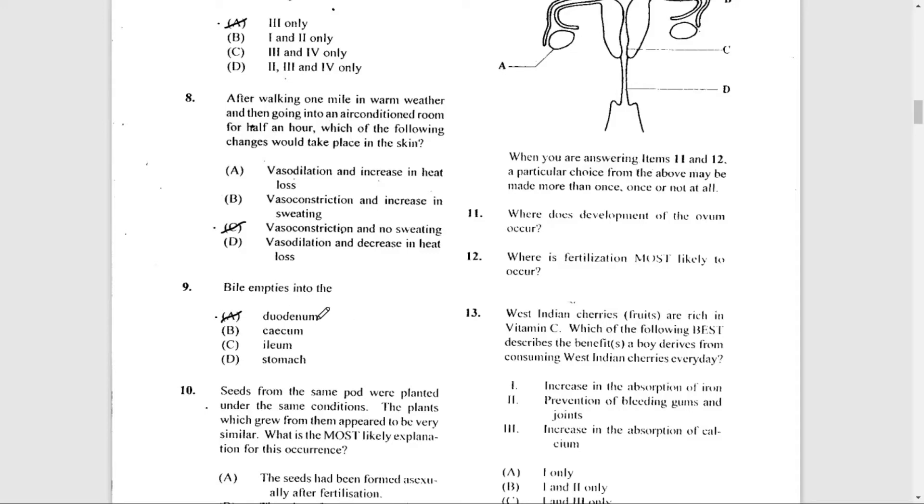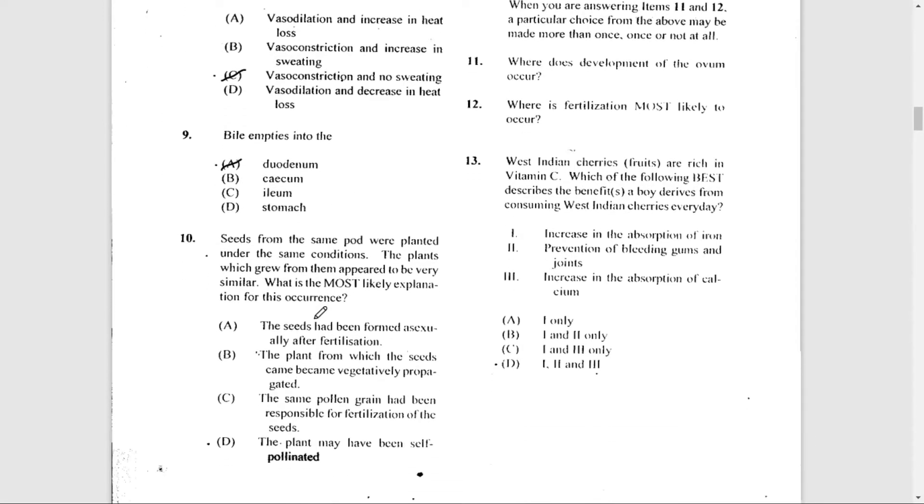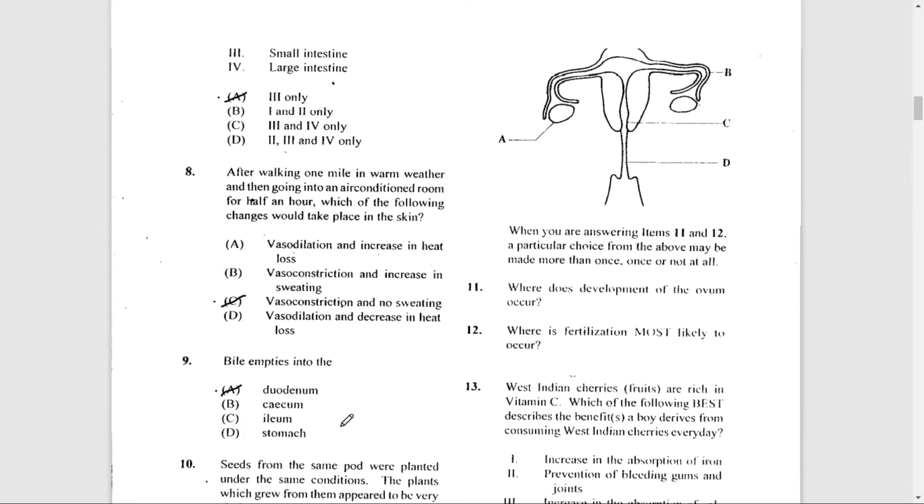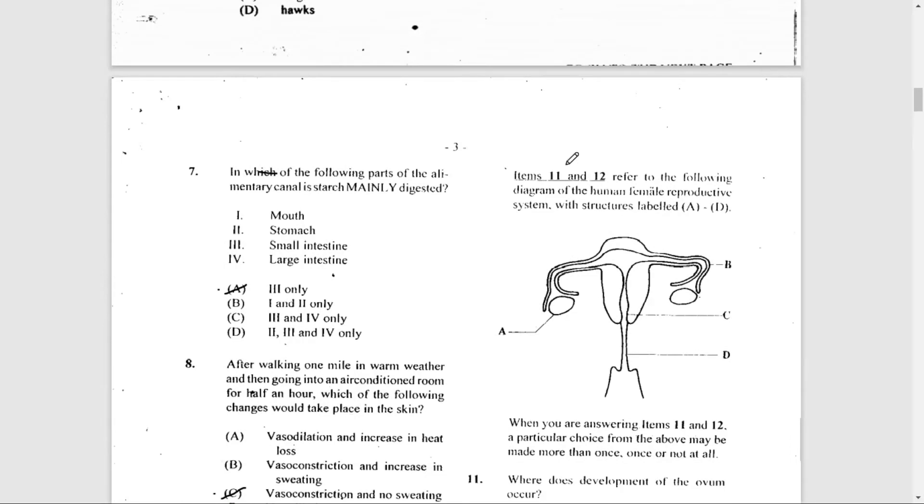Number 10: Seeds from the same part were planted under the same conditions. The plants which grew from them appeared to be very similar. What is the most likely explanation for this occurrence? The answer here is D: the plants may have been self-pollinated.